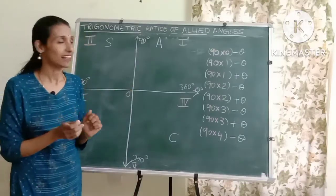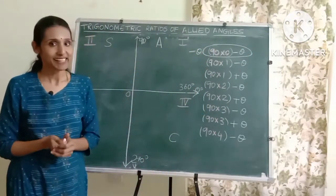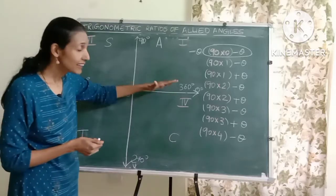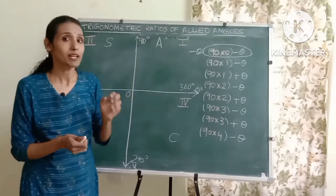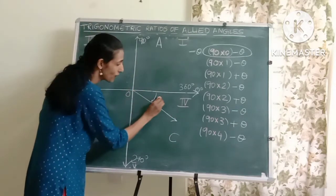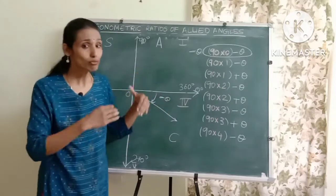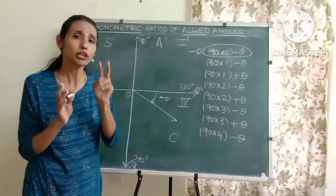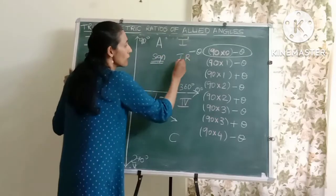Let's start with the first allied angle, which is minus theta. When we measure theta from the positive side of the x-axis in the clockwise direction, then theta becomes negative. So minus theta will go into the fourth quadrant. While finding the trigonometric ratios of allied angles, you just need to determine two important things: one is the sign, and the other is the trigonometric ratio.